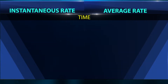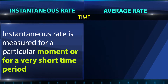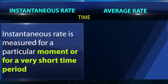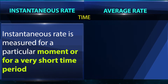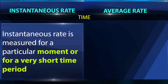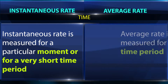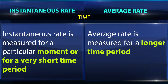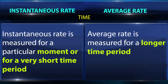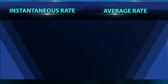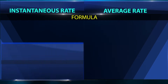Instantaneous Rate is measured for a particular moment or for a very short time period. Average Rate is measured for a longer time period.